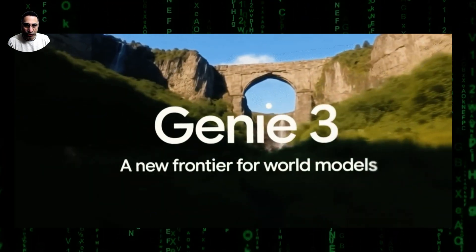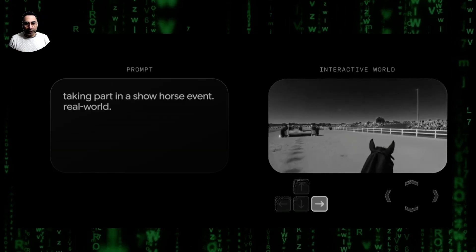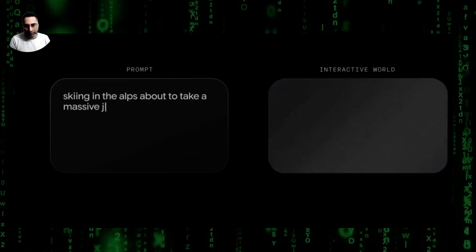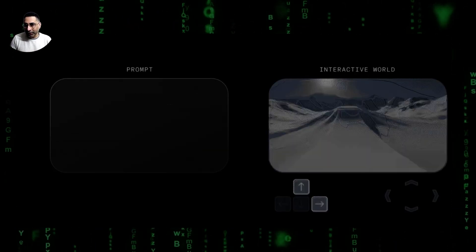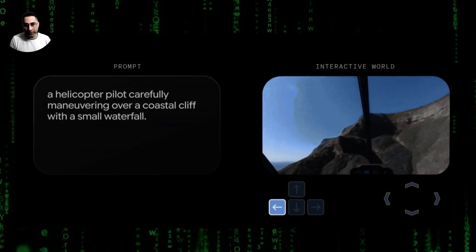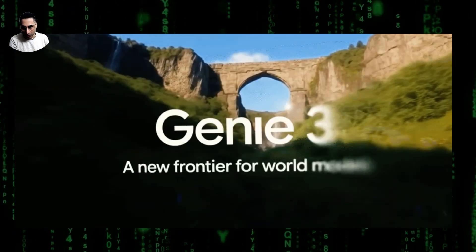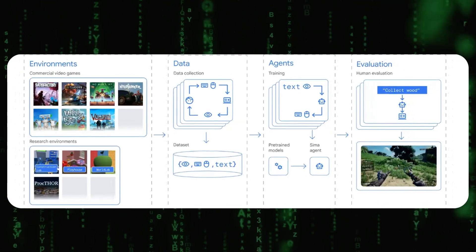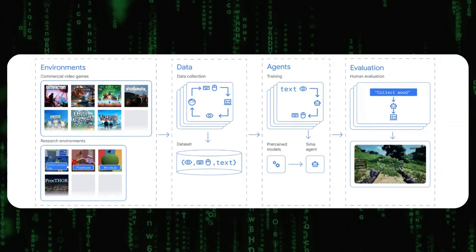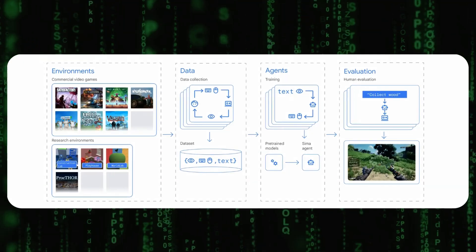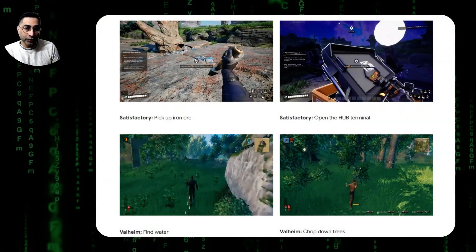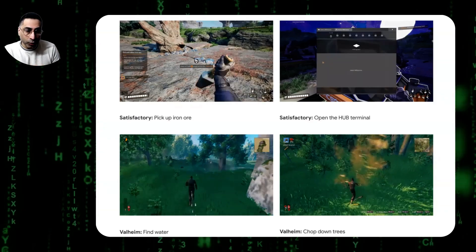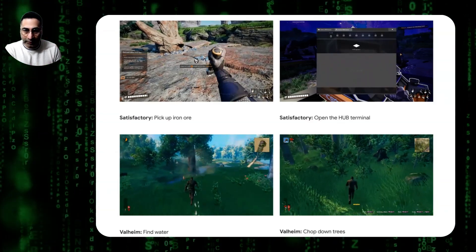So what exactly is Genie? It's what scientists are calling a generative interactive environment. A normal AI can create a picture, but a world model AI like Genie can create the entire digital space behind the picture and then hands you the control. It basically learned how to do this by watching over 200,000 hours of videos of 2D platformer gamers from the internet. It was never told the rules — it just watched, and on its own it figured out concepts like jump, run, and interact.